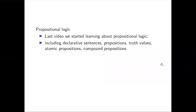We started by defining declarative sentences — these are sentences that state some fact. For example, 'the sky is blue' is a declarative sentence. We also defined propositions: these are declarative sentences specifically that have a truth value of either true or false, and not both. So 'the sky is blue' is both a declarative sentence and a proposition.